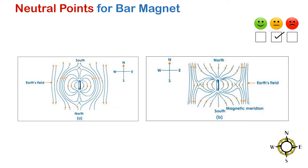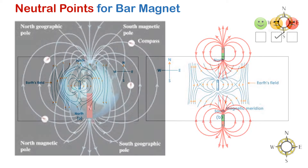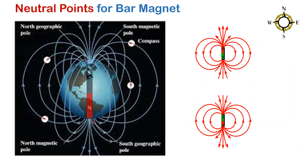In this video we will discuss neutral points for a bar magnet. The earth is a big magnet — it has the magnetic north pole on the geographic south, and the magnetic south pole on the geographic north.